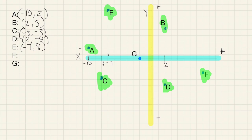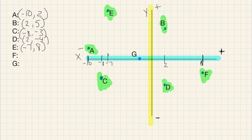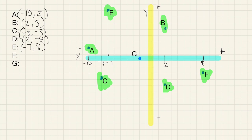F is over here. Starting at 0, 0, I go over 1 through 8 to the right — so this is positive 8. And then down 1, 2 — so negative 2. So F is positive 8, negative 2.